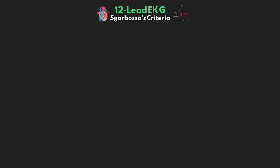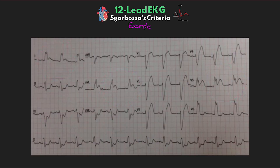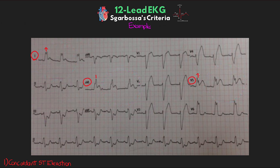Now that we've covered the criteria, let's look at an example of an EKG that shows all three of these criteria present. Starting with concordant ST elevation — hopefully you can see it in three different leads. If you look at our lateral and high lateral leads, you can see concordant ST elevation in leads I, AVL, and V5, all at least 1 mm in height. With these predominantly positive R-waves, due to the rule of appropriate T-wave discordance, we'd expect to see negative T-waves and ST depression, but instead here we have ST elevation. Seeing this in even just one lead, we can say this patient is having a STEMI.